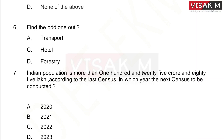Question six: Find out the odd one out. Options: A, Transport; B, Banking; C, Hotel; D, Forestry. The odd one out is D, Forestry, because the others belong to the tertiary sector while forestry belongs to the primary sector.